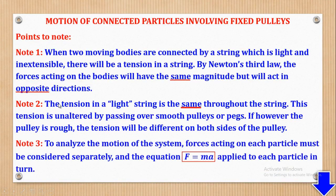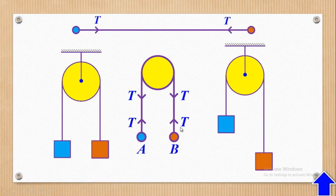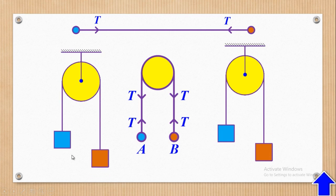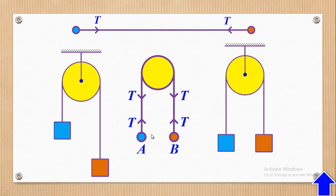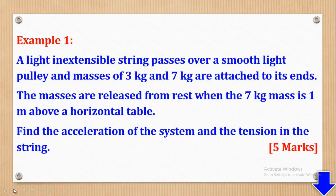Note 3 is that to analyze the motion of the system, forces acting on each particle must be considered separately and the equation F = MA applied to each particle in turn. The motion depends on which one is heavier. If A is heavier than B, A will move downwards and B will move upwards. On the other hand, if B is heavier than A, B will move downwards and A will move upwards. With that noted, we can now go to the examples.